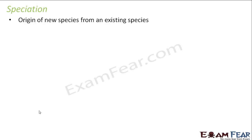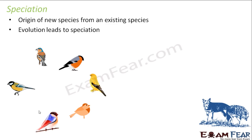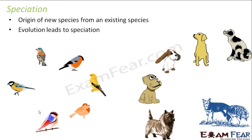So how do new species form from already existing old species? Evolution leads to speciation. Examples we discussed include the origin of so many different species of finches from a single finch. When finches first came to the Galapagos Islands, there was only one species; from that one species, so many different types arose. Similarly, the formation of so many different types of dogs from grey wolves is also speciation, because they all belong to different species.